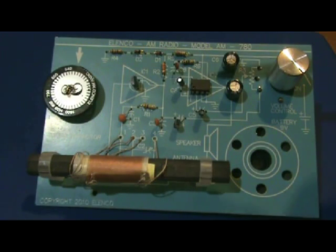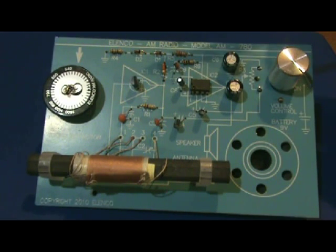The signal received goes to the integrated circuit IC1. This component is the equivalent of 10 transistors. The power to this circuit is controlled by the resistor R4 and the diodes D1 and D2.